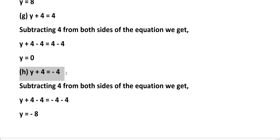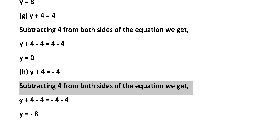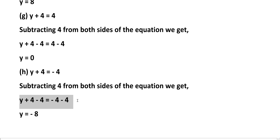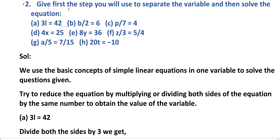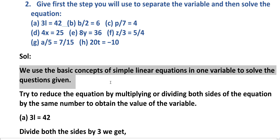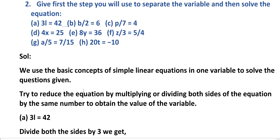H: y plus 4 equals minus 4. Subtracting 4 from both sides of the equation we get y plus 4 minus 4 equals minus 4 minus 4. Plus 4 minus 4 cancel, minus 4 minus 4 equals minus 8, that is y equals minus 8. Second problem: Give the first step we will use to separate the variable, then solve the equations. Solution: We use the basic concepts of simple linear equations in one variable to solve the questions given. Try to reduce the equation by multiplying or dividing both sides by the same number to obtain the value of the variable.